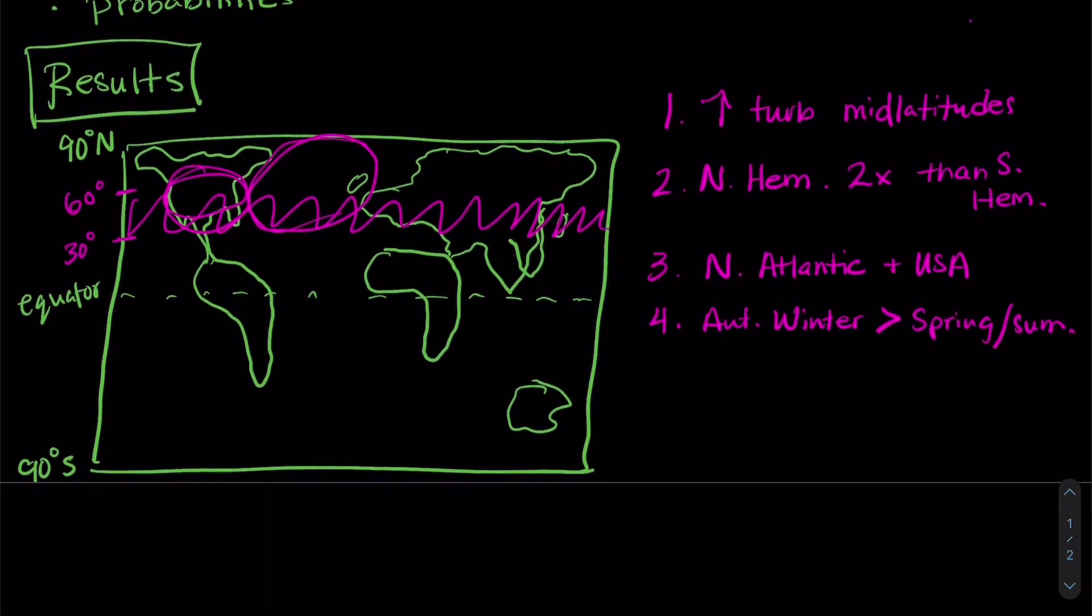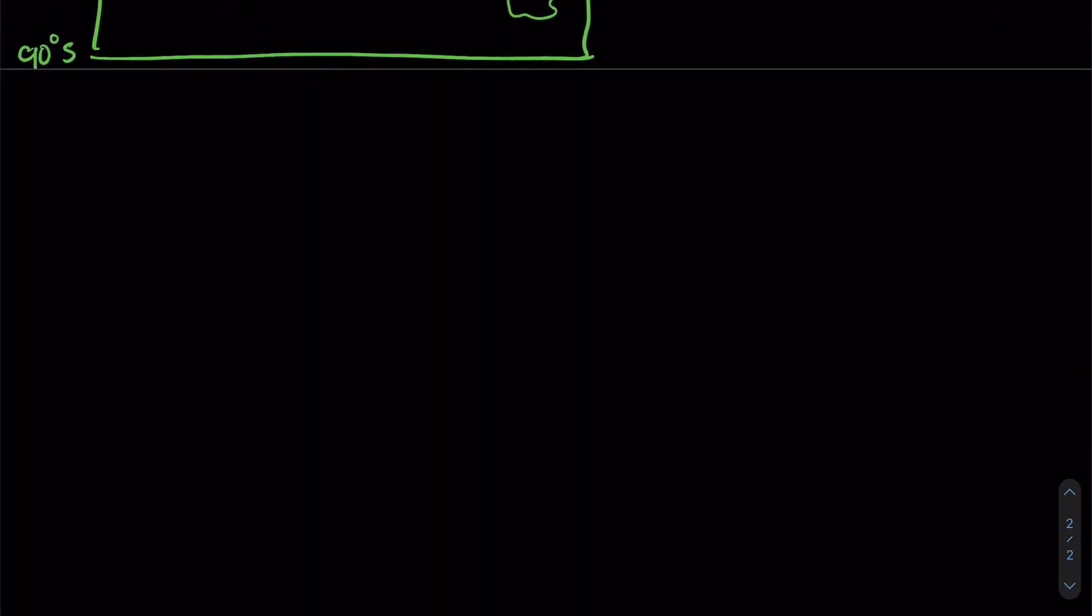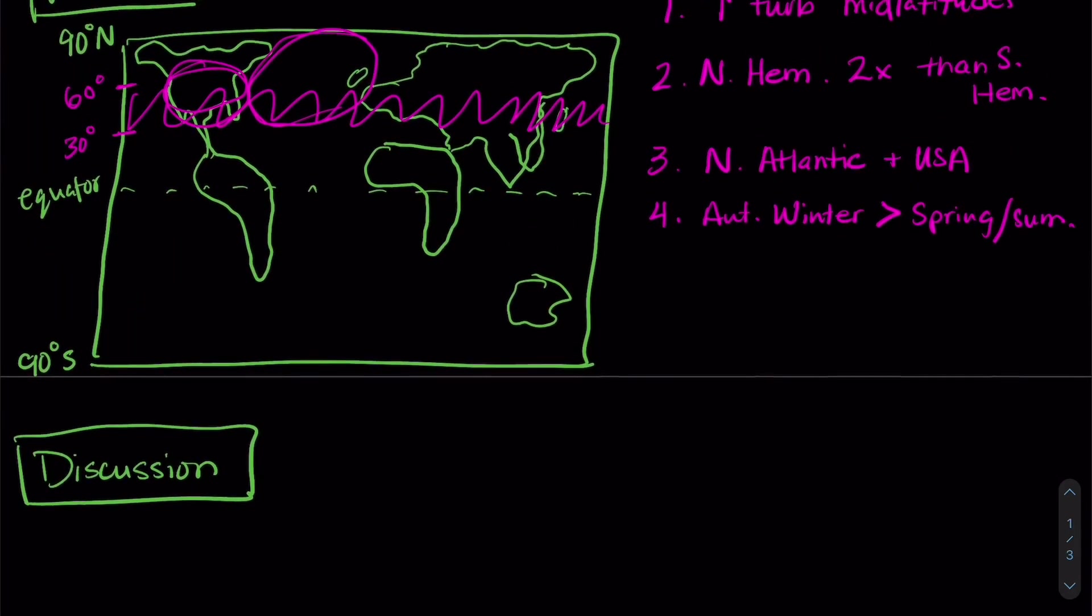So what does this all mean? Let's have a little discussion here. Now the first thing to remind you of is that turbulence causes lots of damage to airplanes and it also has the potential to injure people. So based on this map that we have, one thing that is really important is that there is increased turbulence in areas that have the most flights.